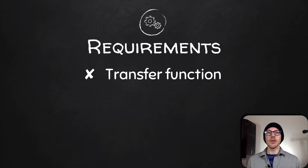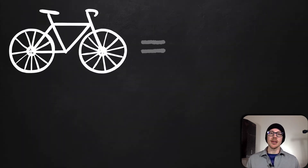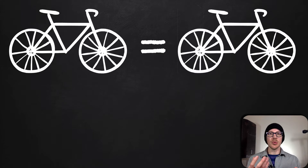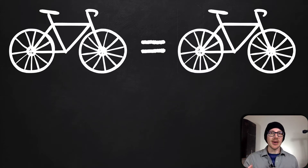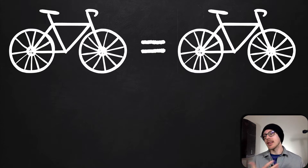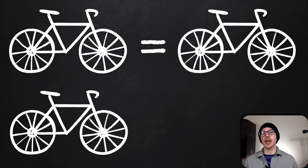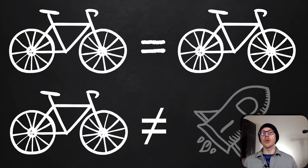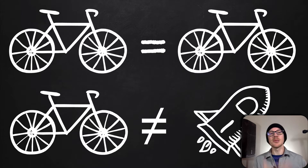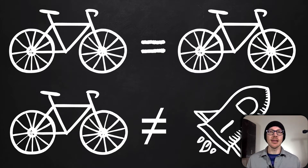A transfer function is the process of comparing an input to an output so that we can see — if we send a bicycle out, do we get a bicycle back? Or how is it different? And therefore, what sort of changes do we need to make? Or maybe it comes back as a rocket ship — then there might be a problem and we need to look into that.